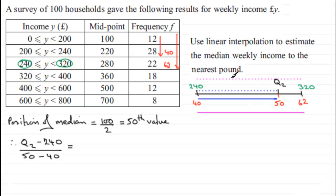So we therefore have Q2 minus 240, and that's compared to the equivalent width below, so it's going to be 50 take away 40, and that's going to equal the top width here, 320 minus 240, and that's compared with the width below, 62 minus 40.